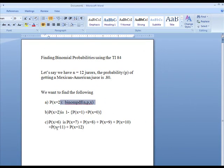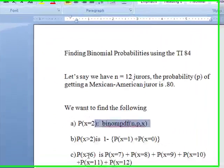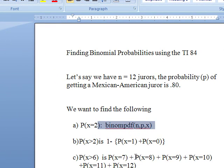All right, let's look at the last one, where we're looking at the probability that X is greater than 6. What is the probability that we'll get more than 6 jurors for a Mexican-American? We're going to follow through with the same definition, the binompdf, and what we're going to do is add 7, 8, 9, 10, 11, and 12 together using the same concept with the second entry.